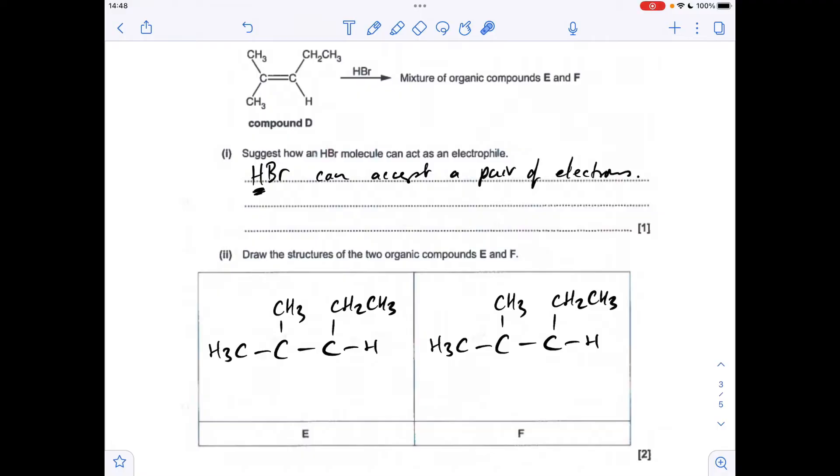And the next part, compound D reacts with HBr to form a mixture of compounds E and F. So you can see, hopefully, what I've done. I've broken the double bond, so I've just got a single bond there. And we can either add the H there and the Br there, or the other way around.